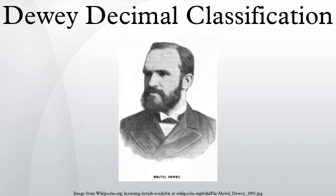His classification system was mentioned in an article in the first issue of the Library Journal and in an article by Dewey in the Department of Education Publication Public Libraries in America in 1876. In March 1876, he applied for and received copyright on the first edition of the index. The edition was 44 pages in length, with 2,000 index entries, and was printed in 200 copies.